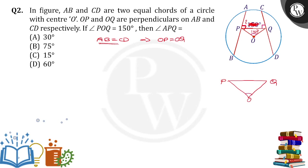Angle POQ is given as 150 degrees. We know that OP equals OQ, so when OP equals OQ, their opposite angles are also equal, which means angle P equals angle Q.